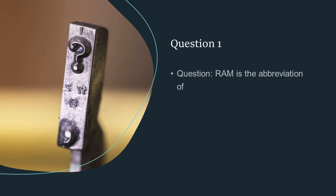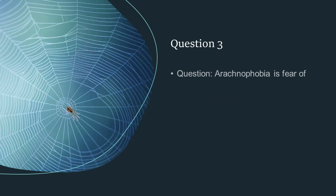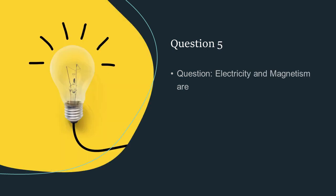Question 1: RAM is the abbreviation of random access memory. Which of the following is an infectious disease? HIV AIDS. Arachnophobia is the fear of spider. One light year is equal to distance travelled by light in one of our solar year. Electricity and magnetism are two aspects of the same force.